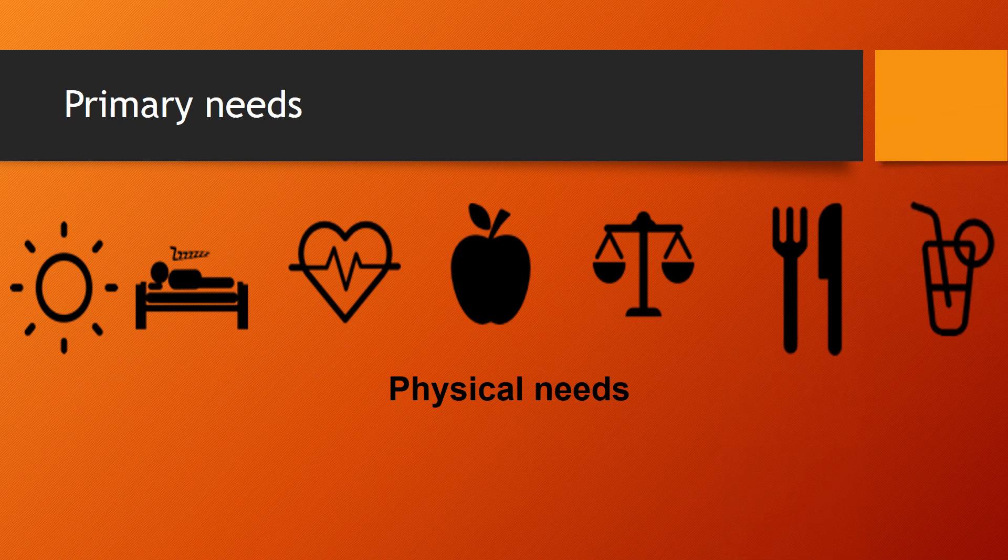Primary needs are our most basic survival needs — the things that we have to have in order to stay alive. They are put in two groups: physical needs and security needs. Physical needs are the things that our bodies have to have, for example food, water, sleep. If these physical needs are not met, our bodies cannot function properly. Examples include oxygen for breathing, food to eat, water to drink, the need to sleep, and the need to be protected from the weather, whether hot or cold.